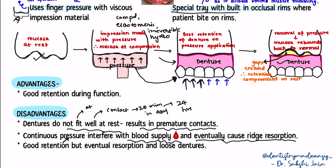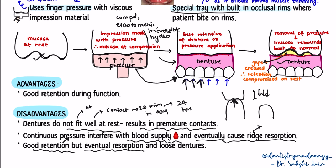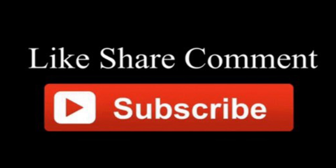Constant pressure can also lead to mucosal tissue reaction. Another disadvantage is that ridge resorption leads to loose dentures over time — the denture was made for a ridge at a certain position, but constant pressure causes resorption, making the denture loose eventually. The final disadvantage, as discussed with closed mouth technique, is limited muscle trimming leading to over-extended dentures needing arbitrary trimming. These are the four disadvantages of mucocompressive theory. I hope you found this video helpful — please like, comment, share, and subscribe.